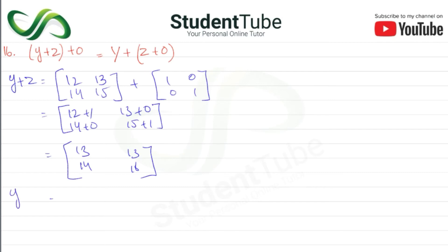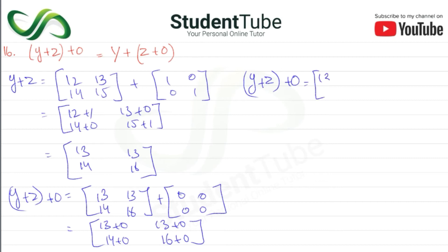Now we calculate (Y + Z) + O. We write [13, 14; 13, 16] plus O, which is the matrix [0, 0; 0, 0]. So 13+0, 14+0, 13+0, and 16+0. Therefore, Y + Z + O equals [13, 14; 13, 16].